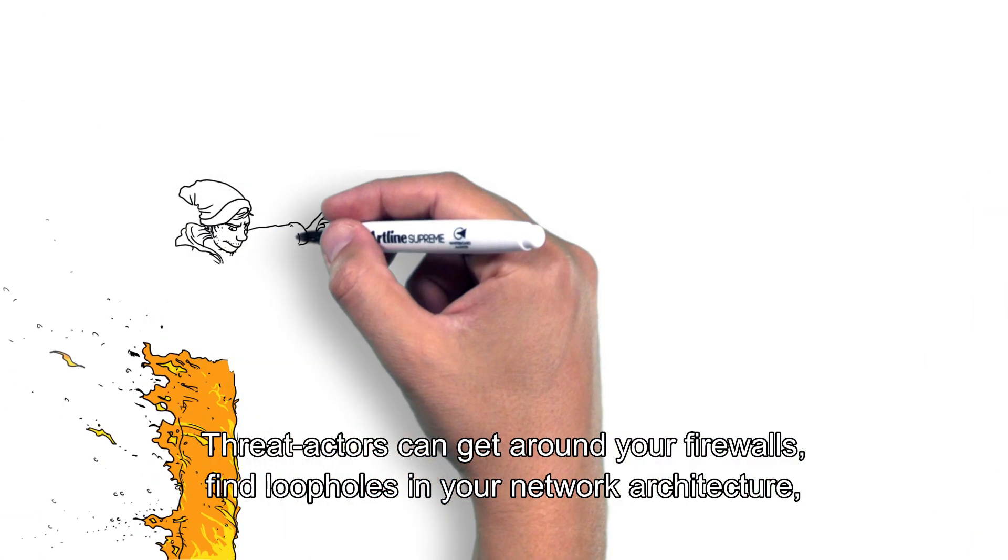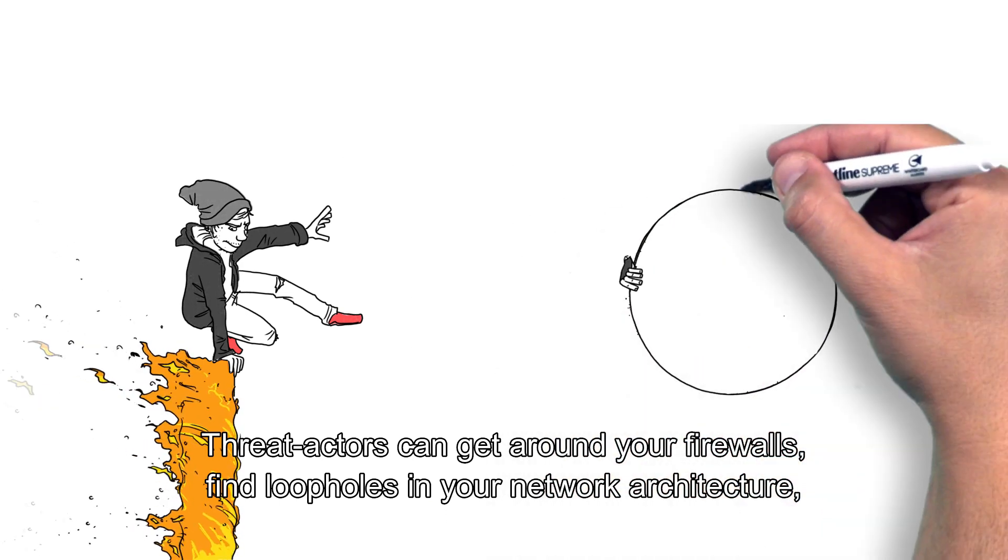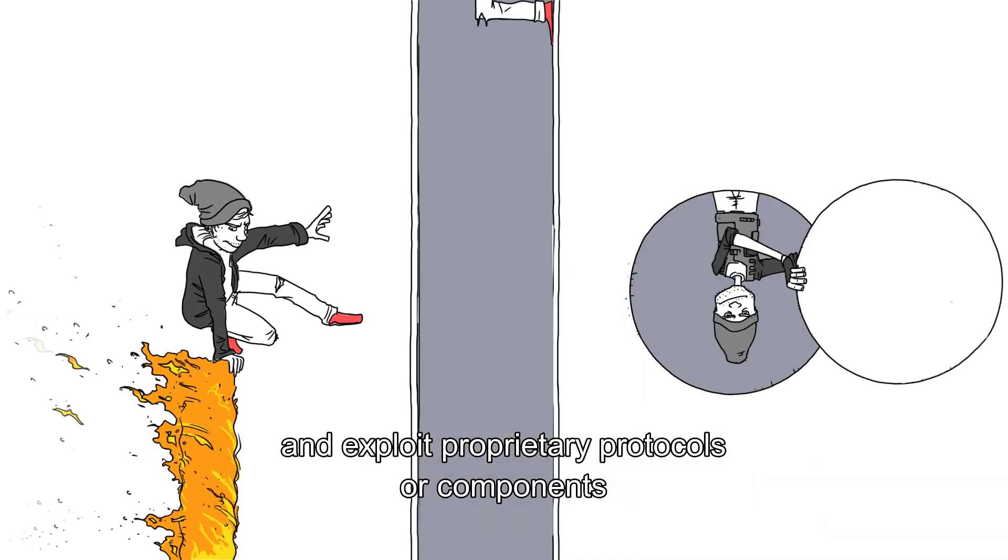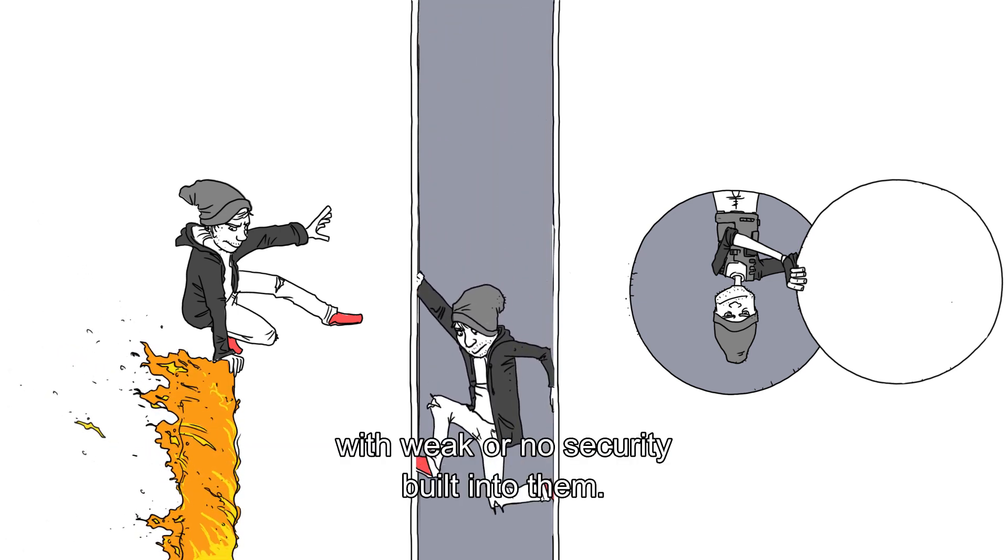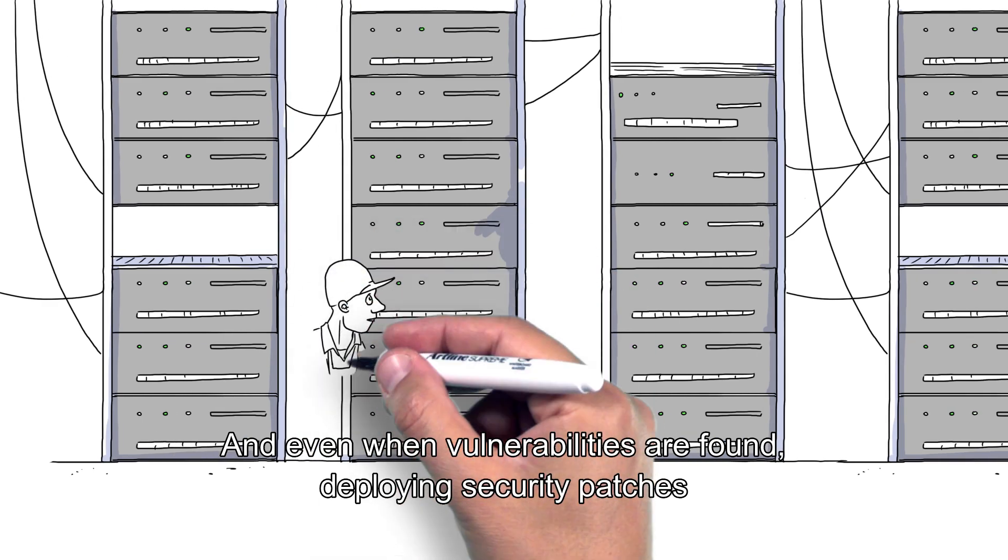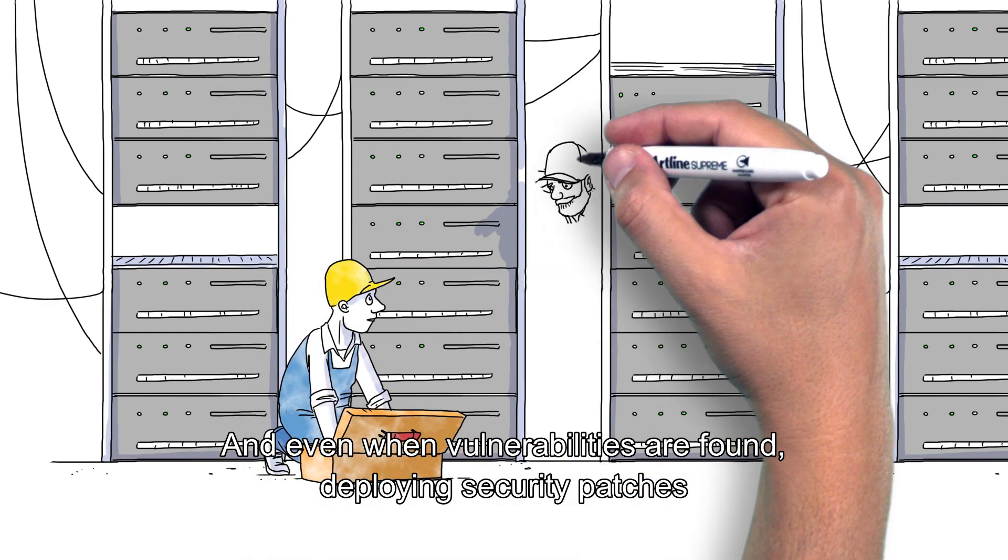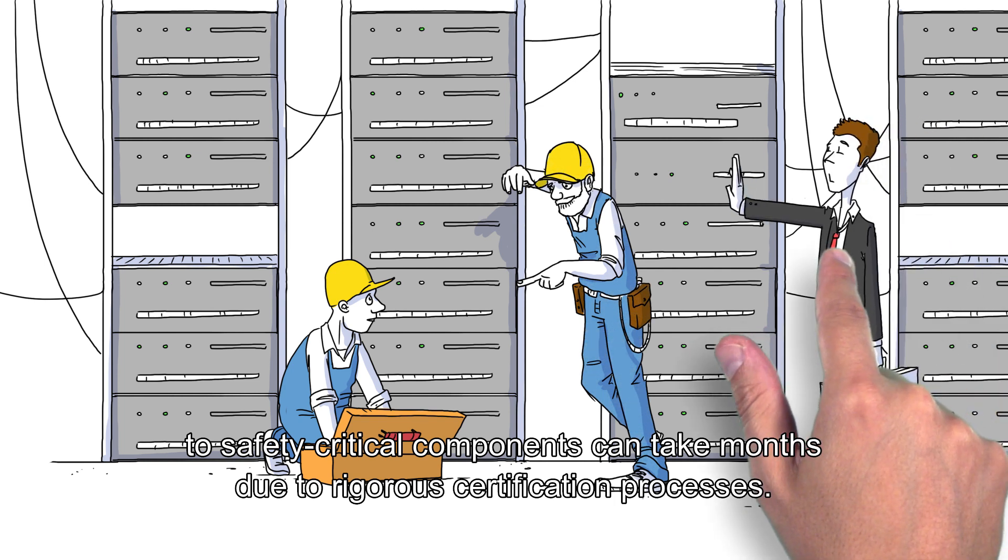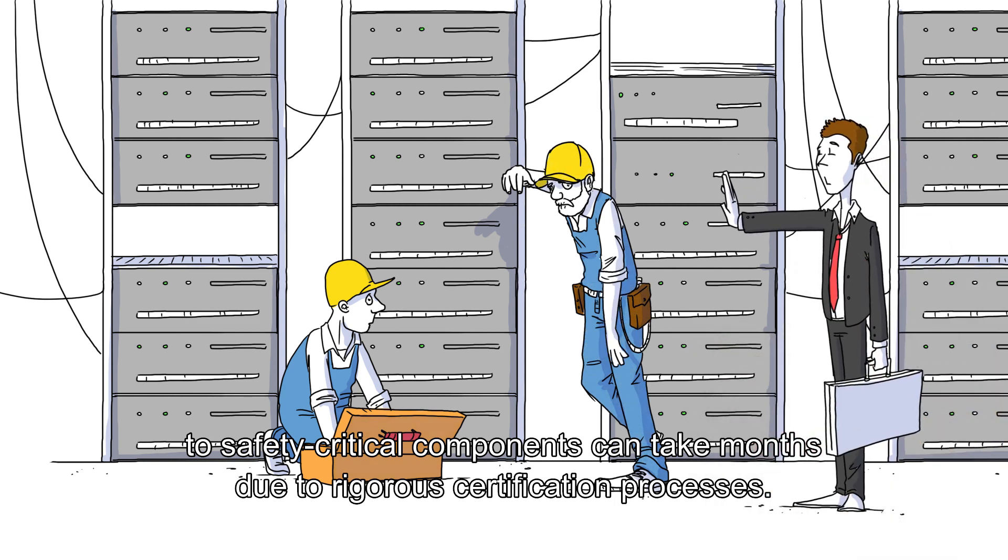Threat actors can get around your firewalls, find loopholes in your network architecture, and exploit proprietary protocols or components with weak or no security built into them. And even when vulnerabilities are found, deploying security patches to safety-critical components can take months due to rigorous certification processes.